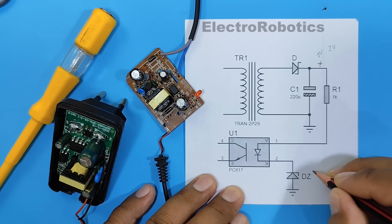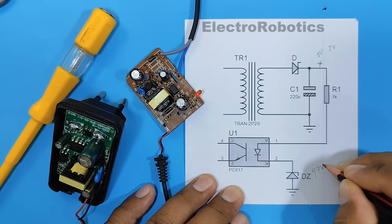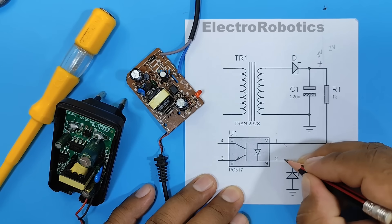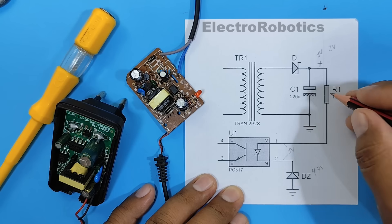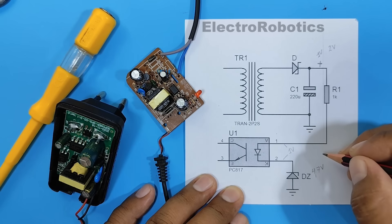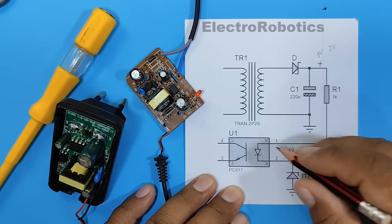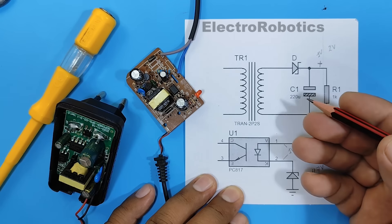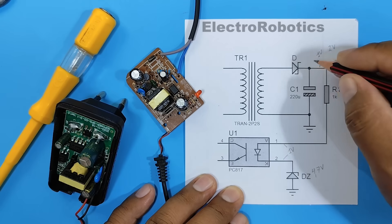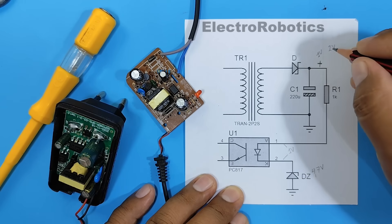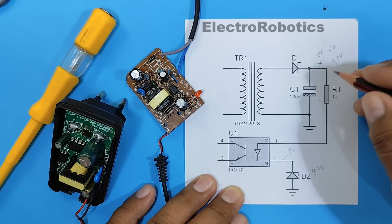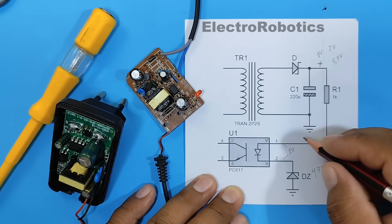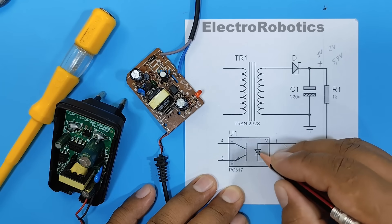For example, if I have a 4.7 volt Zener diode, and the optocoupler diode requires 1 volt, it means that more than 5 volts are required for the optocoupler LED to light up. Therefore, the output of this power supply will be greater than or equal to 5.7 volts.